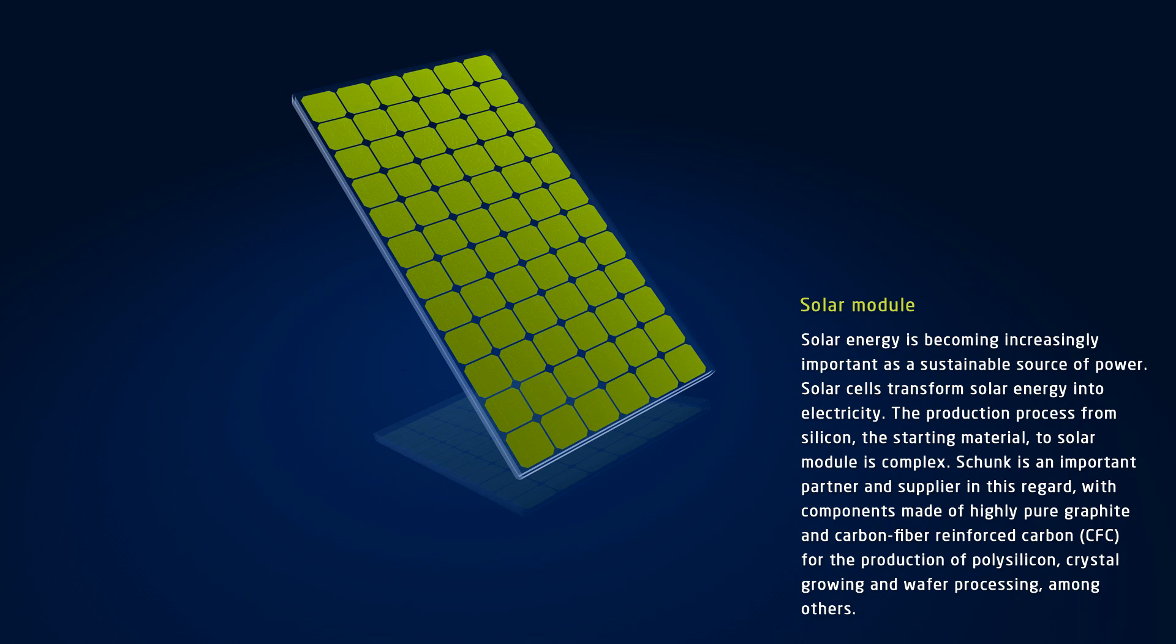The production process from this starting material to solar module is complex. Schunk is an important partner and supplier in this regard, with components made of highly pure graphite and carbon fiber reinforced carbon (CFC) for the production of polysilicon, crystal growing, and wafer processing, among others.